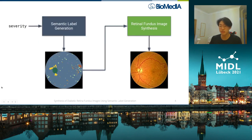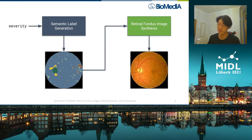The way we're going to do this is actually in two steps. First of all, we're going to generate semantic labels conditioned on our desired severity. And from this, we want to synthesize realistic retinal fundus images based on those semantic labels.